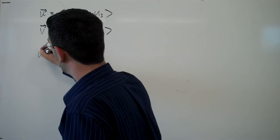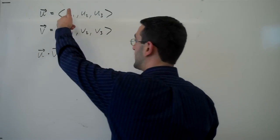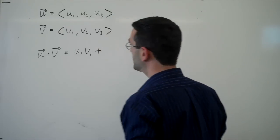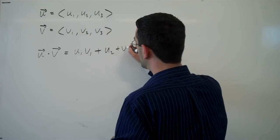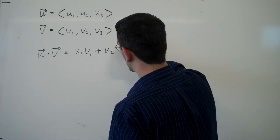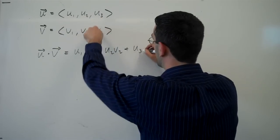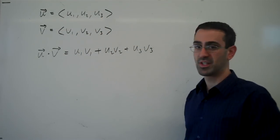then in component form, the dot product of these vectors is the product of the first components plus the product of the second components plus the product of the third components. And that is the component form of the dot product.